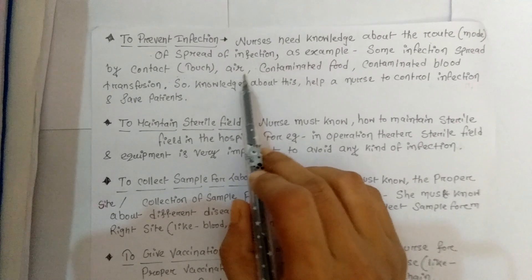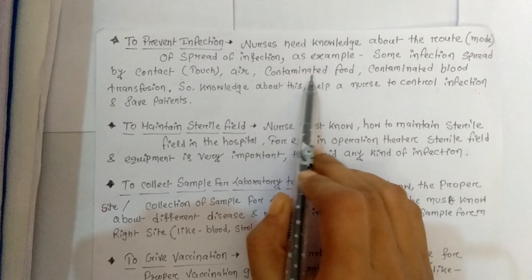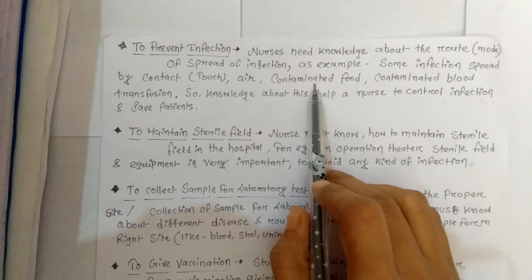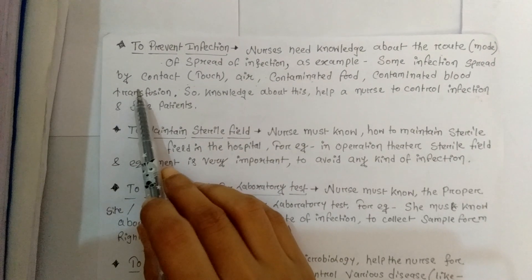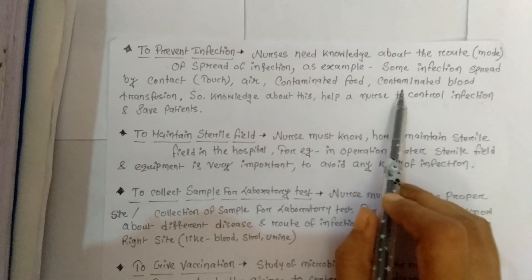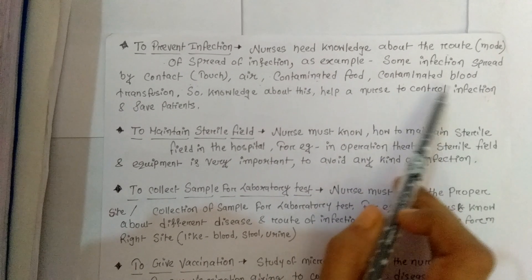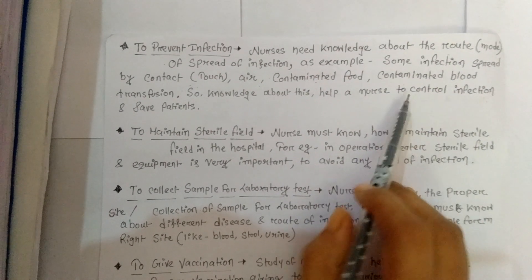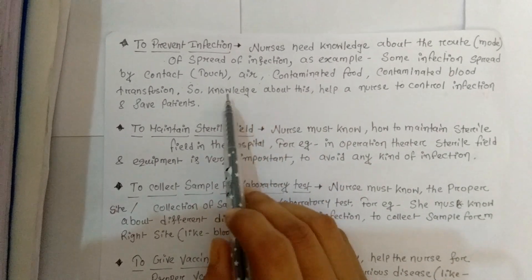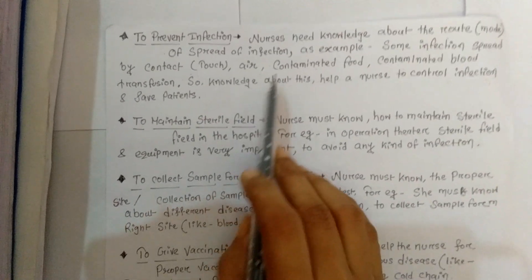By air, many viruses and bacteria can also be spread. Contaminated food is another route — for example, diarrhea can be spread via contaminated food. Contaminated blood transfusion is another route; a common example is HIV/AIDS, which almost everyone knows can be spread via contaminated blood. Knowledge about these routes will help a nurse to control infection and save patients.